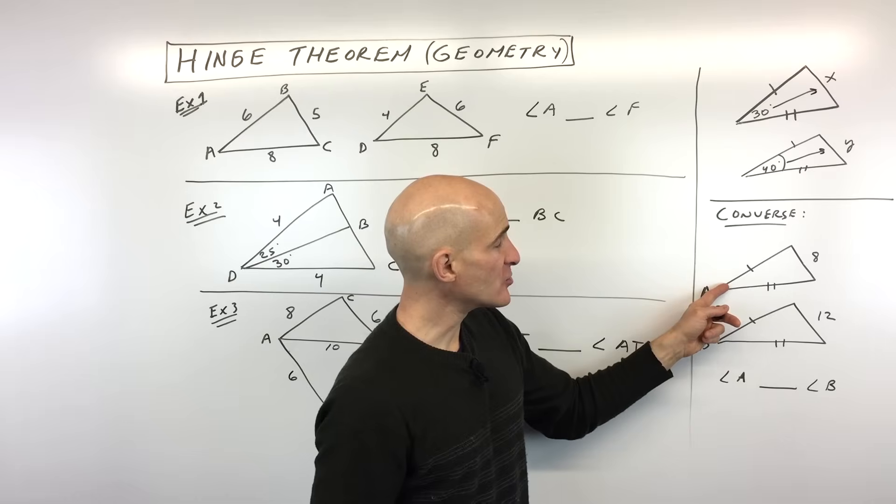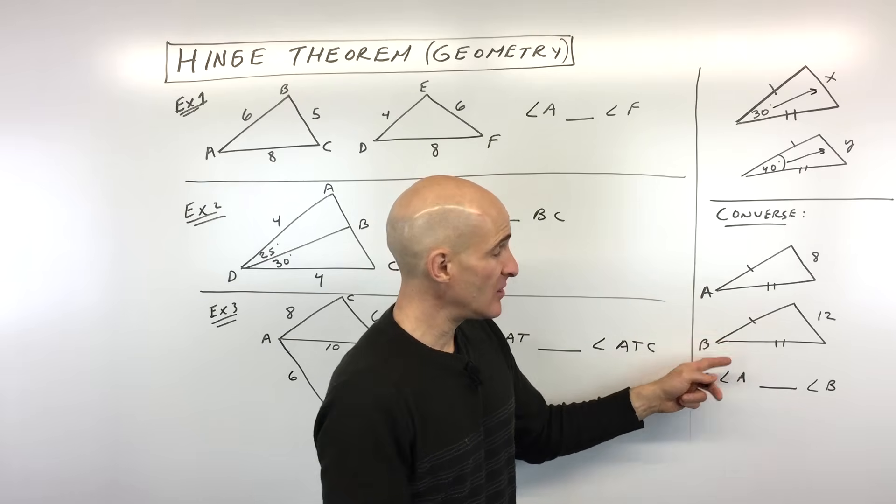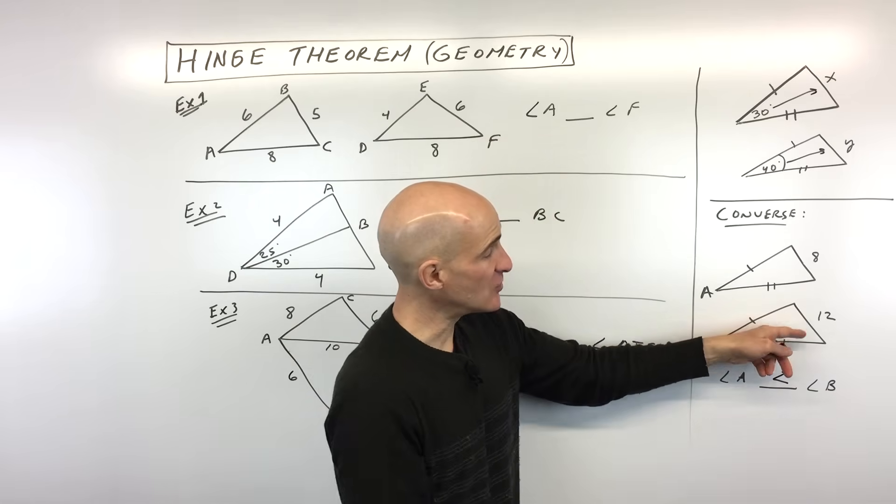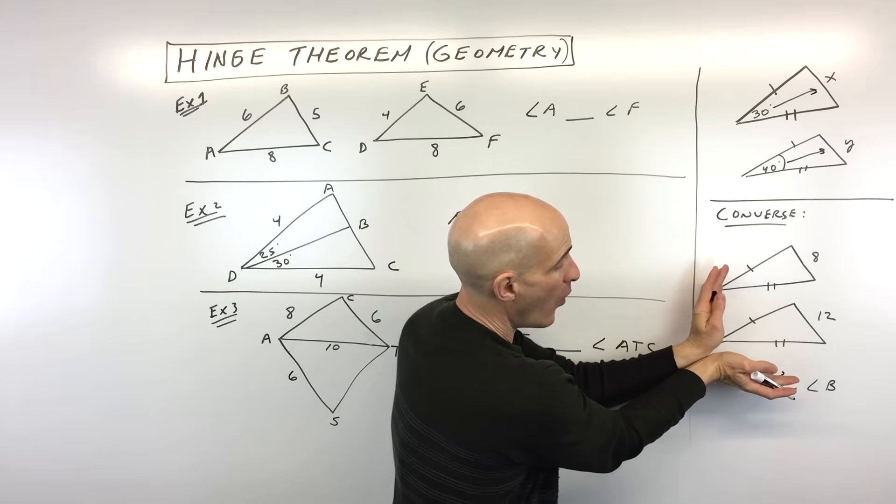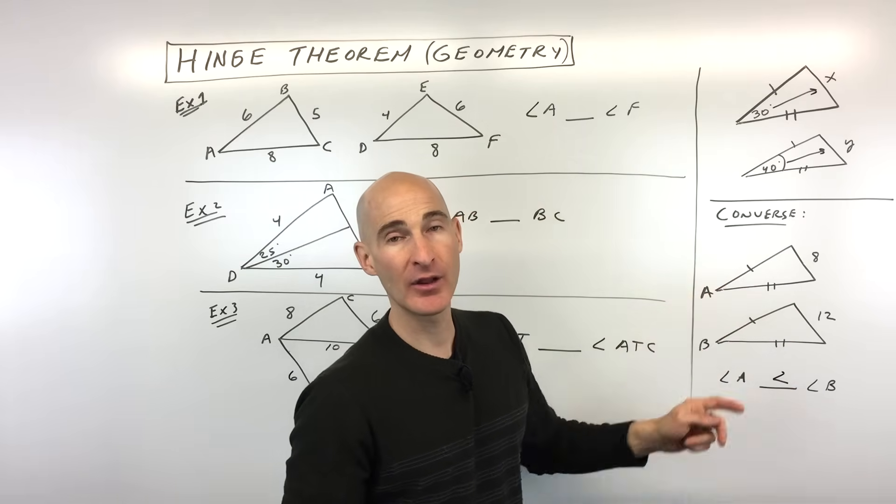Which angle do you think is larger, angle A or angle B? Well if you said angle B, you're absolutely right. So that's greater and the reason is because to accommodate that side 12, we have to open up this hinge wider, right? So this angle B is going to be larger than angle A.